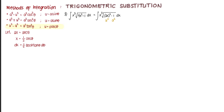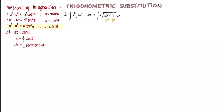Because we are doing substitution, we replace all x's in the integrand with expressions in theta. We already have something to replace dx, which is one half secant theta tangent theta d theta. For x cubed, we raise x to the power of 3: one half raised to the power of 3 gives one eighth, so x cubed equals one eighth secant cubed theta.